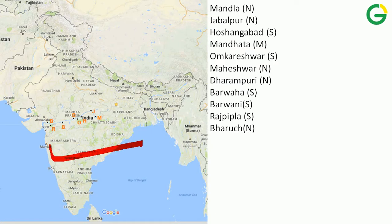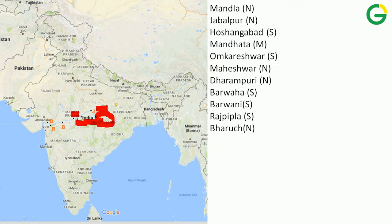Rajpipla is on the left bank and Bharuch is on the right bank, or in the north of the river. In this map of India, we can see Mandla, Jabalpur, Hosangabad, Omkareswar, Dharampuri, Barwani, Rajpipla and Bharuch.